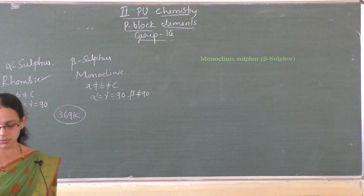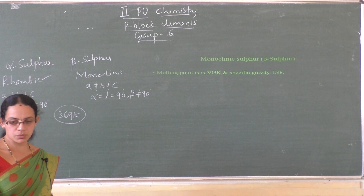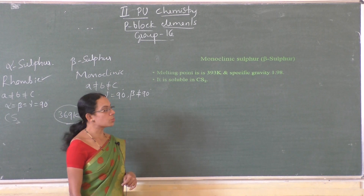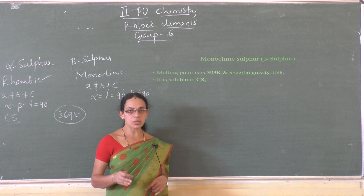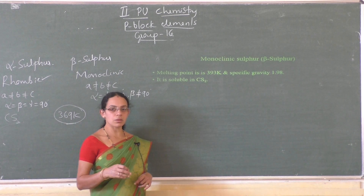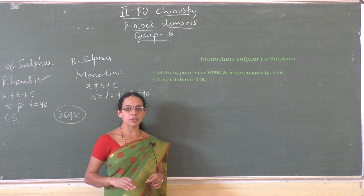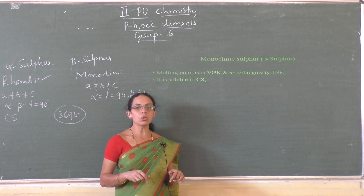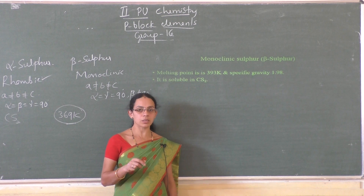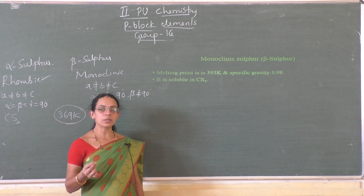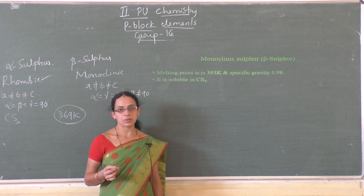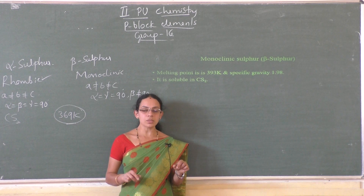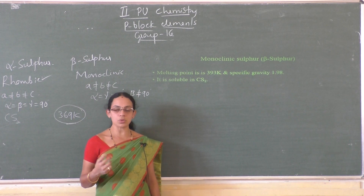Monoclinic sulfur or beta sulfur has a melting point of 393 K and specific gravity of 1.98. It is soluble in carbon disulfide. It is prepared by melting rhombic sulfur in a dish and cooling until a crust is formed. Two holes are made in the crust and the remaining liquid is poured out.